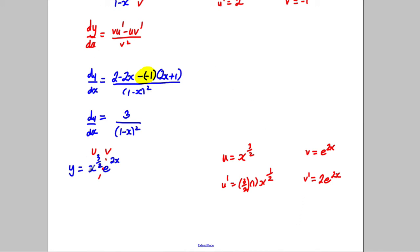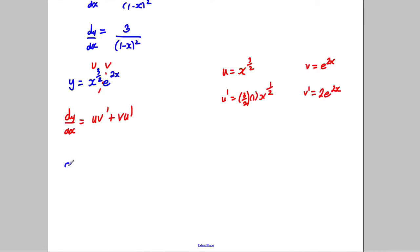So let's use the product rule. The product rule tells us the following, that dy/dx is equal to uv' plus vu', like that. So therefore dy/dx would equal uv dashed. So these two things multiplied, so that's going to be 2x to the 3 over 2, e to the 2x. And these two things multiplied to each other, 3 over 2, x to the half, e to the 2x.